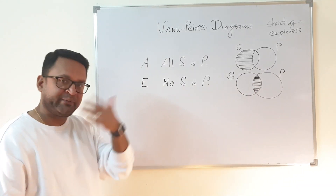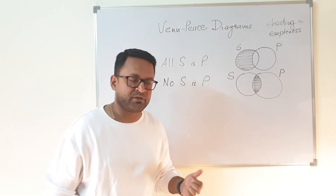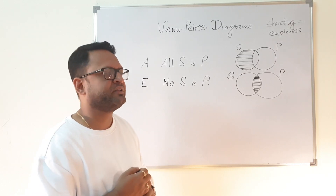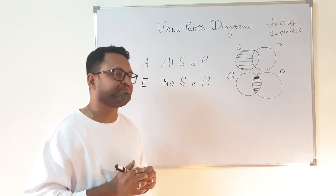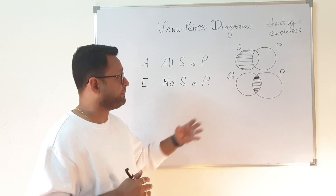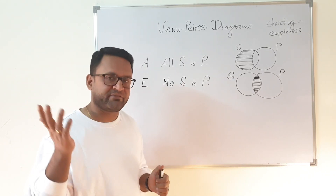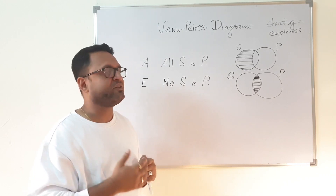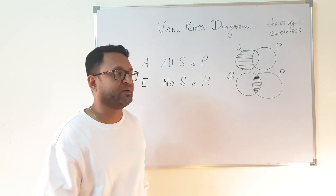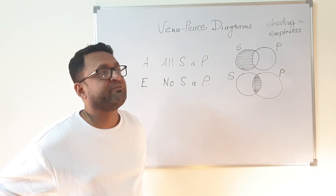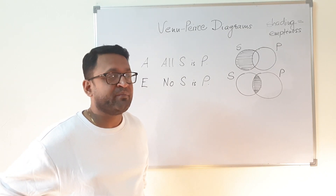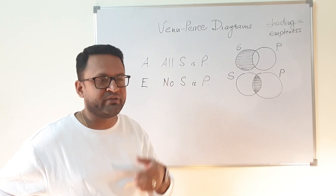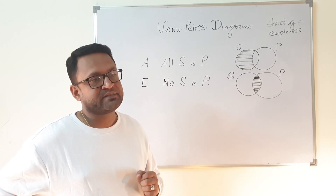Now we will talk about I and O propositions. Venn was not very happy with the way Euler represented categorical propositions and wanted to bring something more meaningful. The history is rich, but it is not in your course. Venn tried in many ways to represent I and O; there is letter correspondence between Venn and Peirce, well documented by Moffetti, where Venn suggested many ways in which I and O could be represented. He was reluctant and gave a lot of ideas.